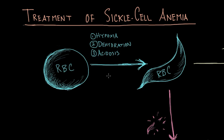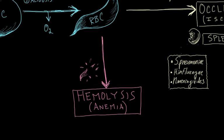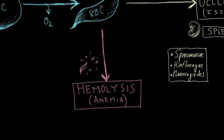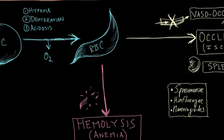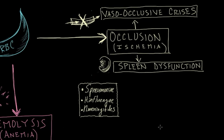The context of the disease is important when talking about treatment of sickle cell anemia. Basically, red blood cells that when they're deoxygenated form a sickle shape. This makes them particularly vulnerable to hemolysis, which can lead to anemia. It also predisposes them to occlusion of blood vessels, which can cause painful vaso-occlusive crises and splenic dysfunction.